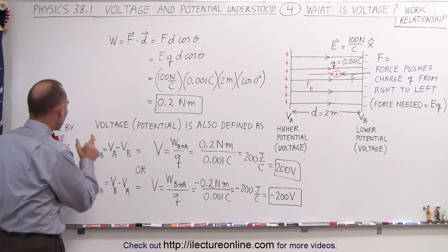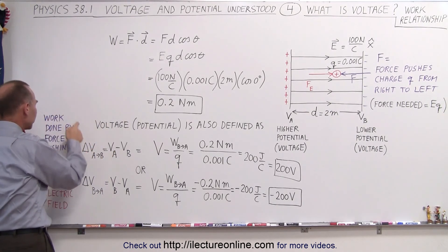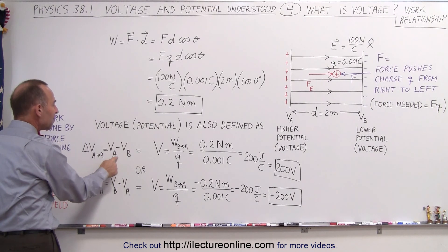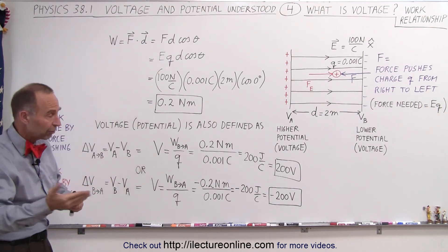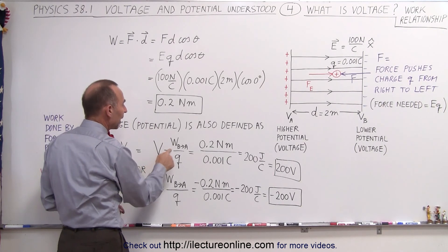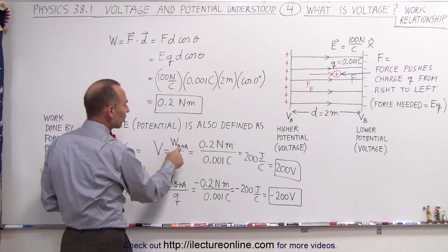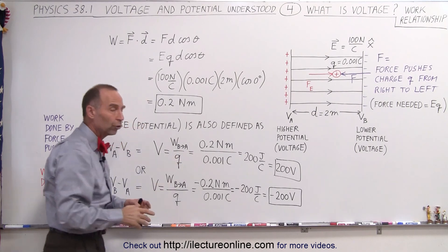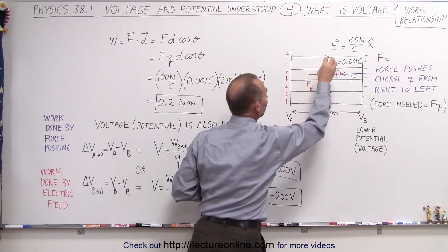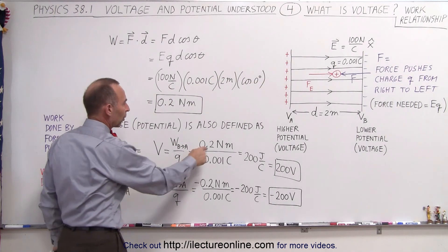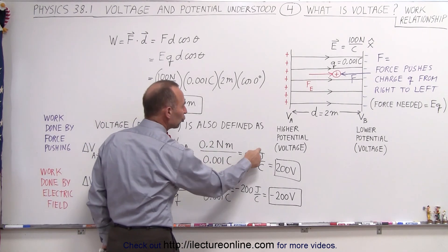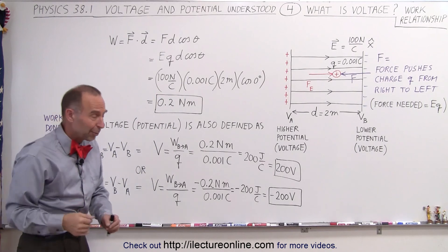We can now define the potential difference by looking at the work done by the force pushing the charge across. We define it as the difference in potential, VA minus VB — VA is the high potential, VB is the low potential, so that gives us a positive difference. The voltage is the work done to move the charge from B to A divided by the charge: 0.2 N·meters divided by 0.001 Coulomb gives us 200 joules per Coulomb, or 200 volts — the same result as in the previous video.